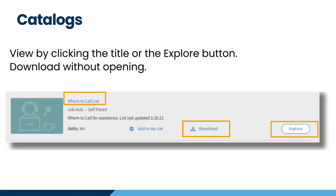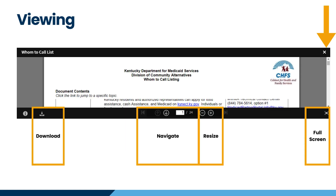You can click on any of the titles of the job aids or use the Explore button to view them. Use the Download button to download them directly from this screen. Once the job aid is opened, you can download it for future use, and navigate through the pages by clicking Next, scrolling, or entering a page number.